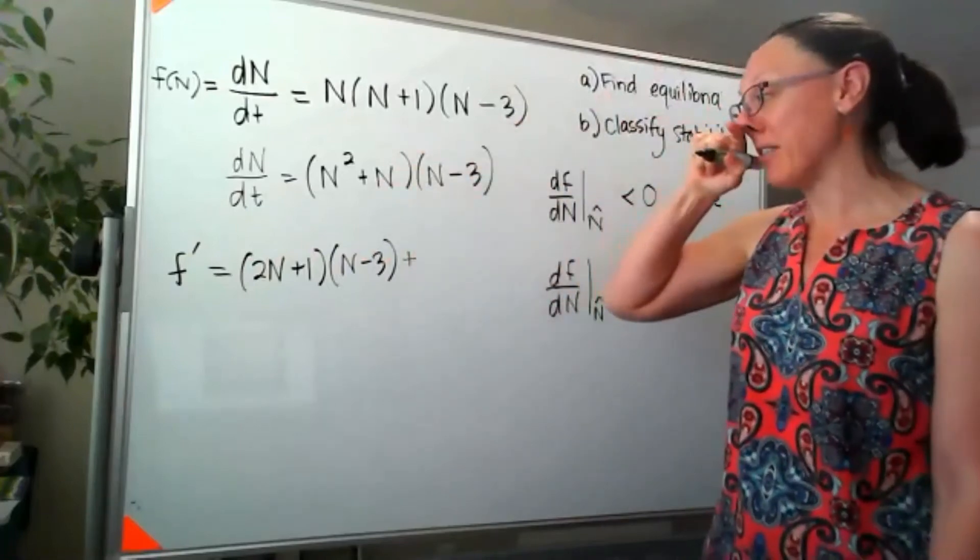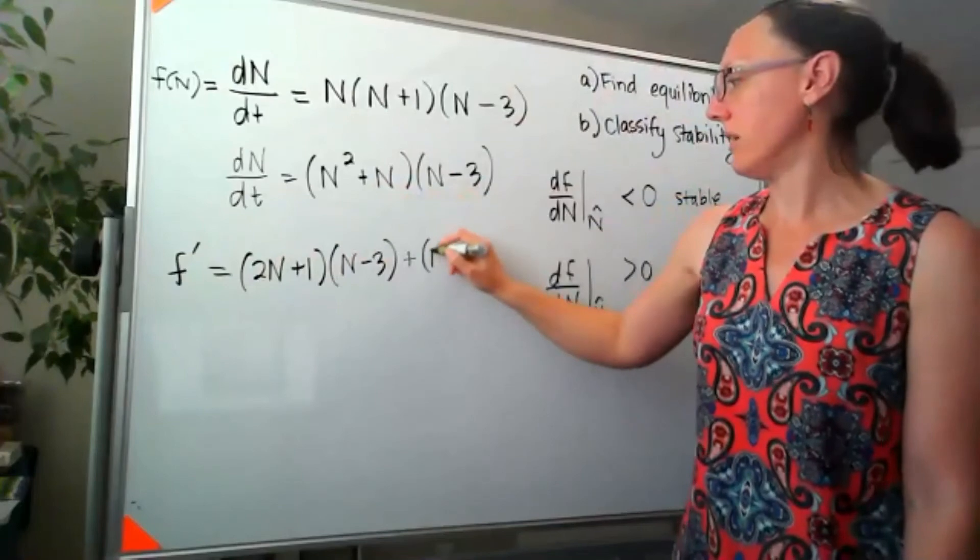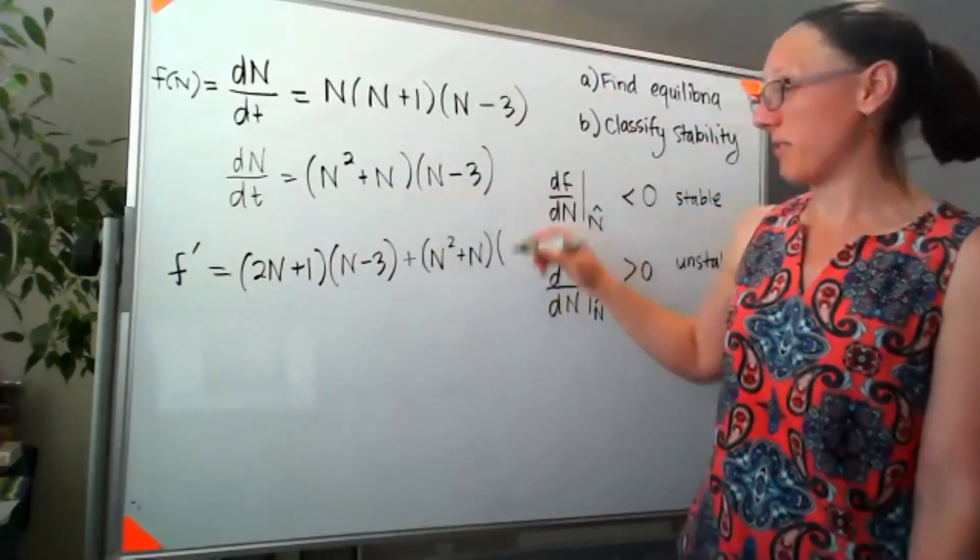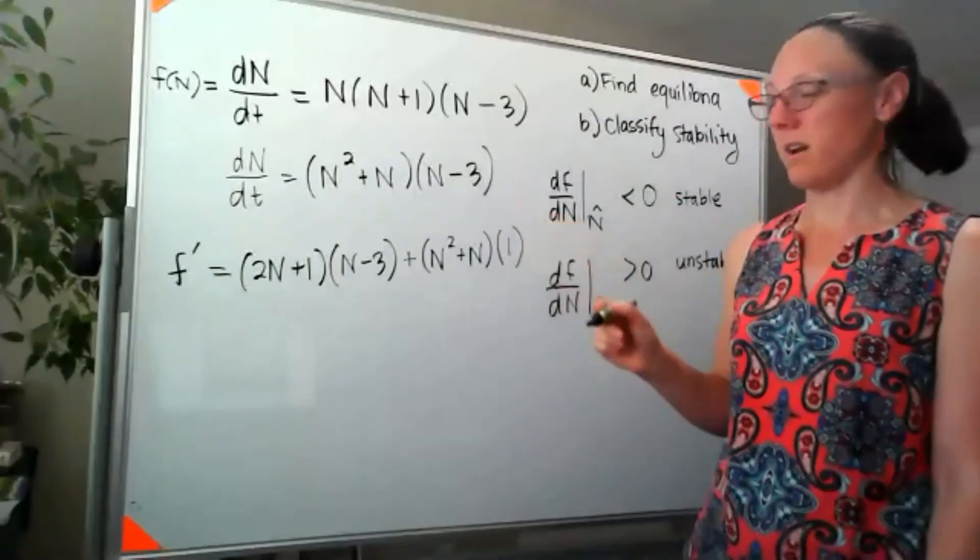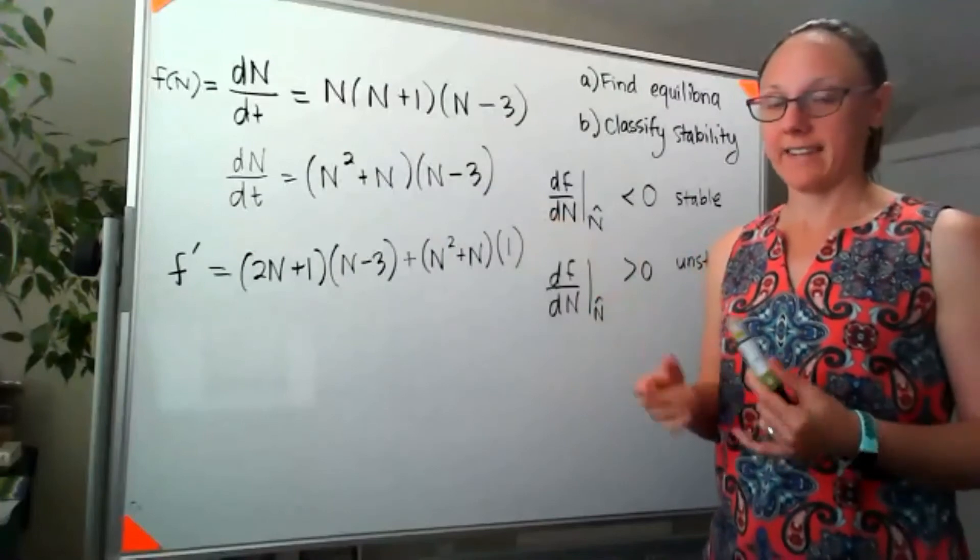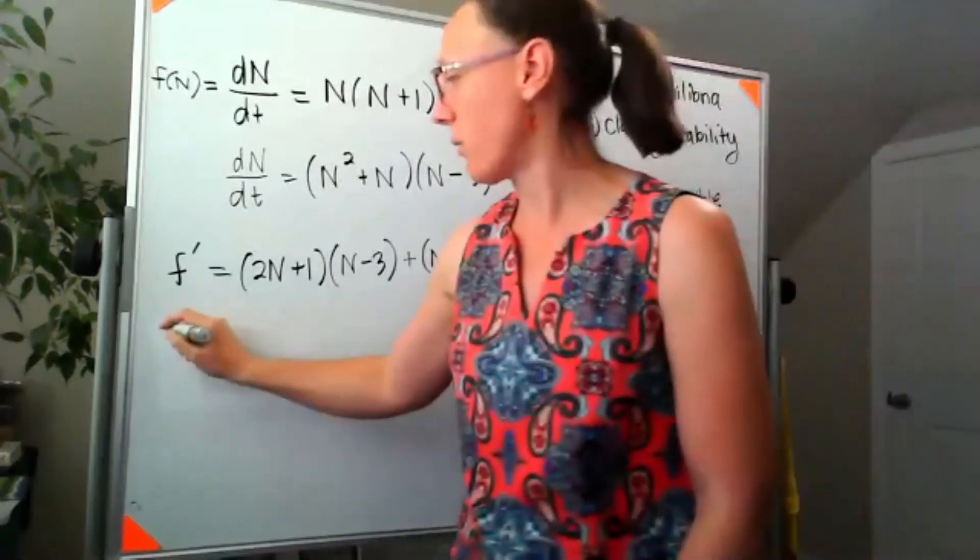So my f prime here, derivative of the first piece, I'm looking at (2n+1) times the second (n-3) plus derivative of, sorry, leave this part alone, (n²+n) times derivative in the second piece, which is a 1. Now I erased them, but our three equilibria that we would test this at are 0, negative 1, and 3. So let's see what we get.